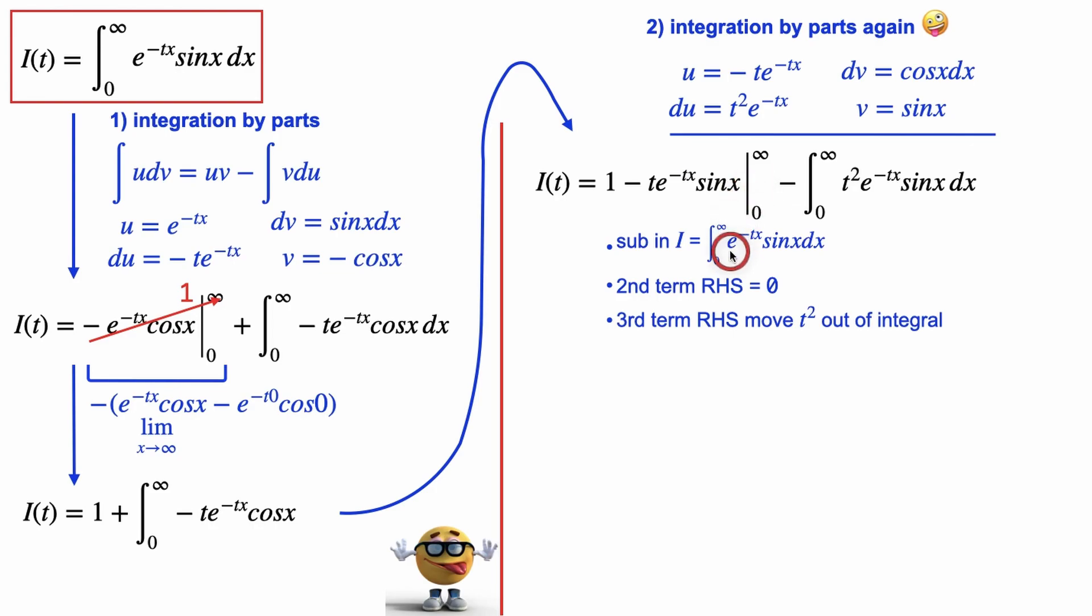This second term becomes 0. So if we evaluate it the same way we did here, in the limit as x goes to infinity, it goes to 0, and sine of x is 0. So this is 0. That's cool.